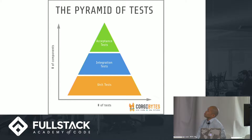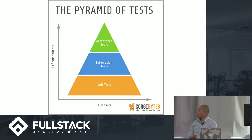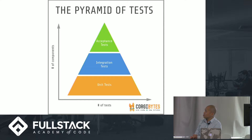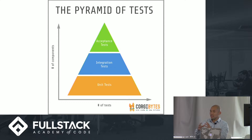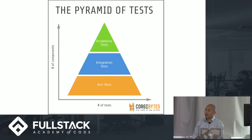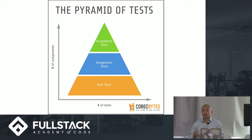This is called the pyramid of tests. It covers the three main types of tests. On the vertical axis is the complexity of the test; on the horizontal axis is the number of tests you should be writing. Starting from the bottom: unit tests, where you test each individual module in isolation to verify the logic works as expected. With integration testing, you test whether different modules can talk to each other and are compatible.